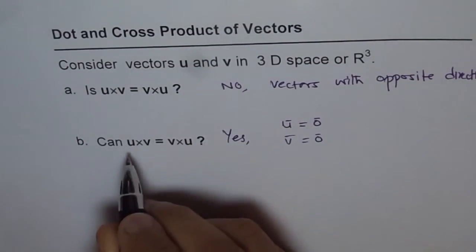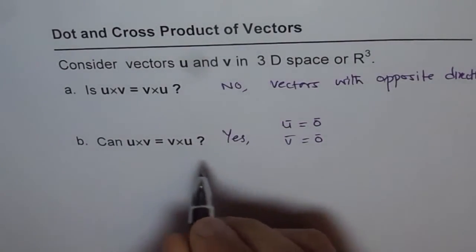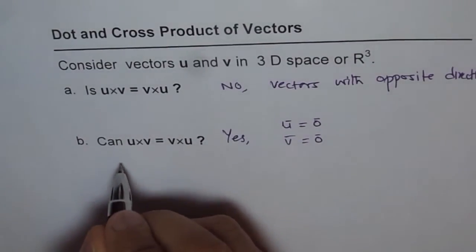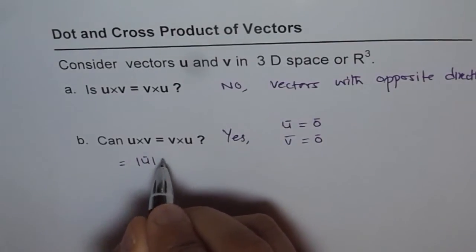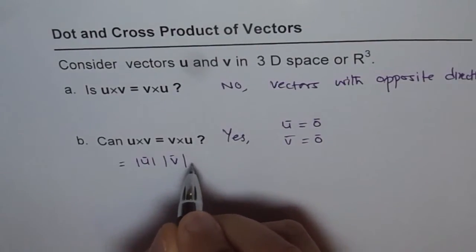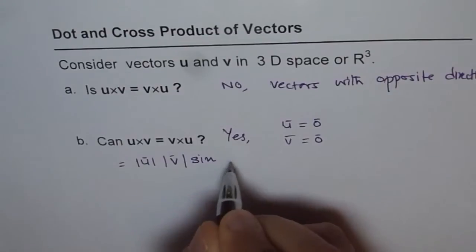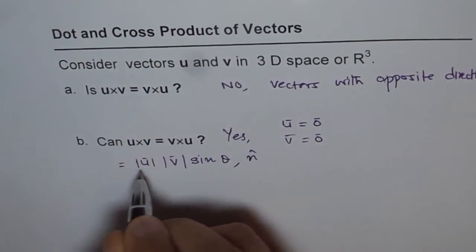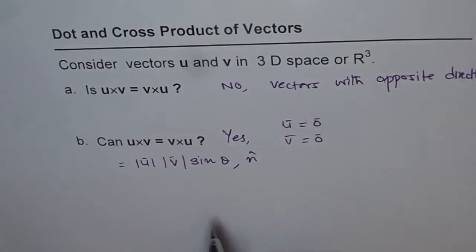You know what is u cross v. Now, u cross v is u v sine theta. So it is actually equal to magnitude of u times magnitude of v times sine theta, the angle between them, and the direction is normal to both u and v.